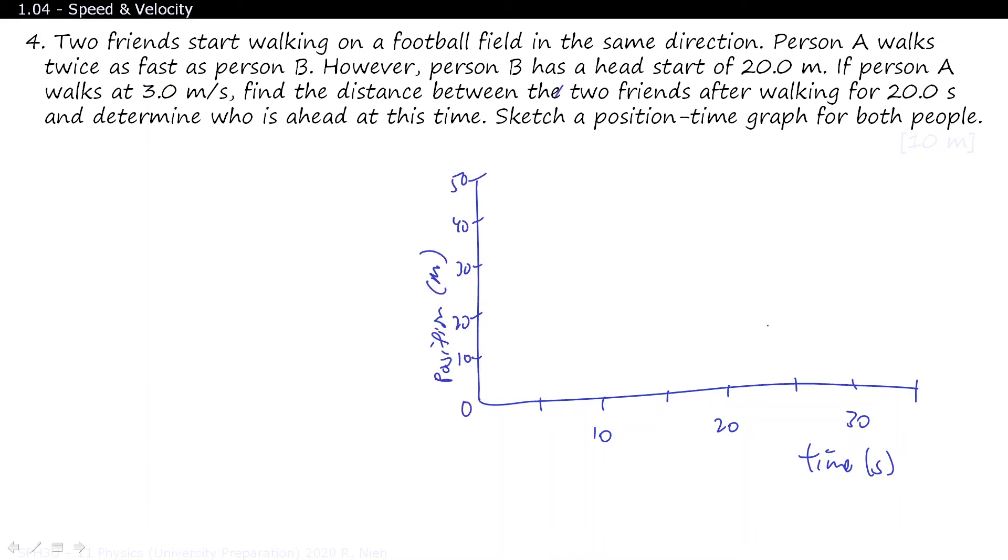So person A starts from position 0. And after 20 seconds, we said that he would travel a total of 60 meters. Of course, we'll be doing this properly using a ruler. I'll try to sketch the best I can. So that is for person A, or friend A. As for friend B, it starts off at 20 meters. And we stayed at the 22nd mark. That person finishes off at the 50 meter mark. So for person B, it would look something more like that. If you were to draw this properly using a ruler, we'd have more exact results.